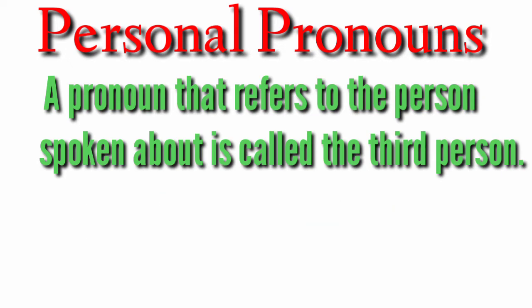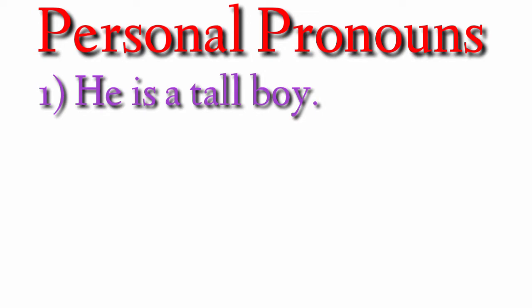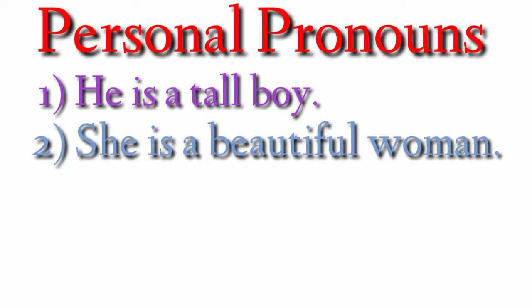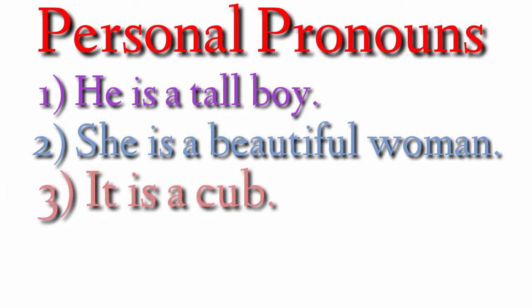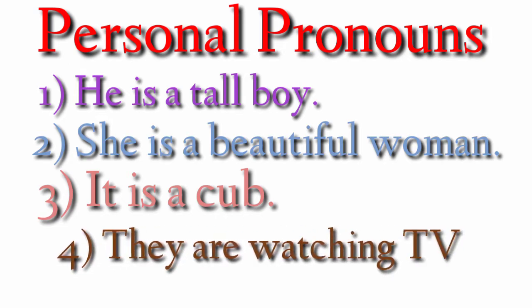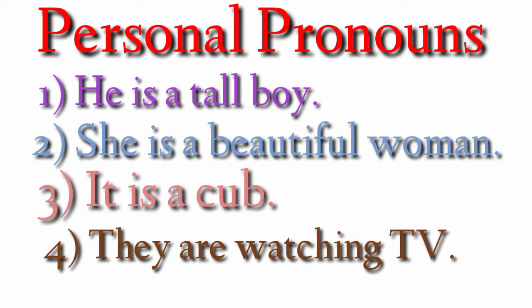Let us see some examples. 'He is a tall boy' — 'he' is a personal pronoun, singular, third person. 'She is a beautiful woman' — 'she' is a personal pronoun, singular, third person. 'It is a cub' — 'it' is a personal pronoun, singular, third person. 'They are watching TV' — 'they' is a personal pronoun, third person plural. In this way, we have seen there are three persons in pronoun: first, second, and third.